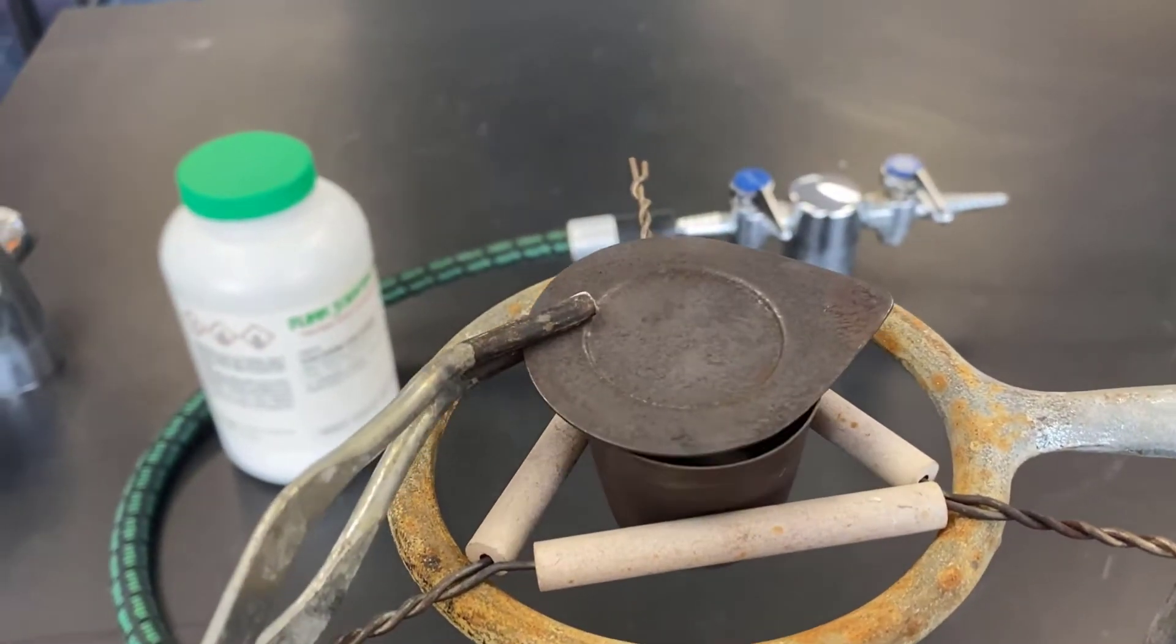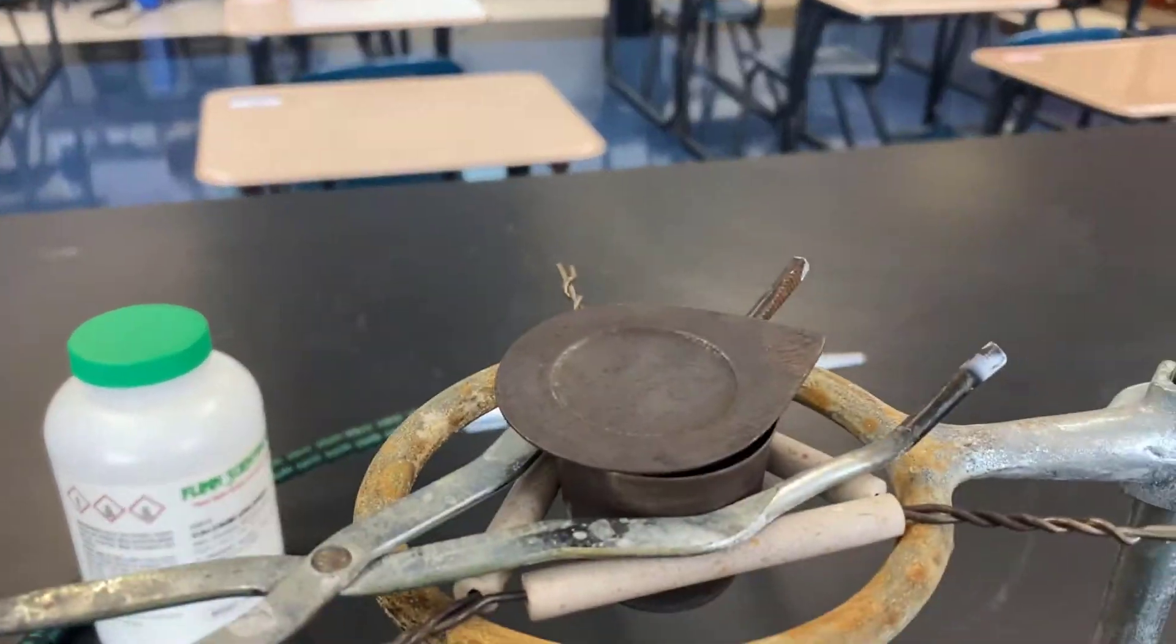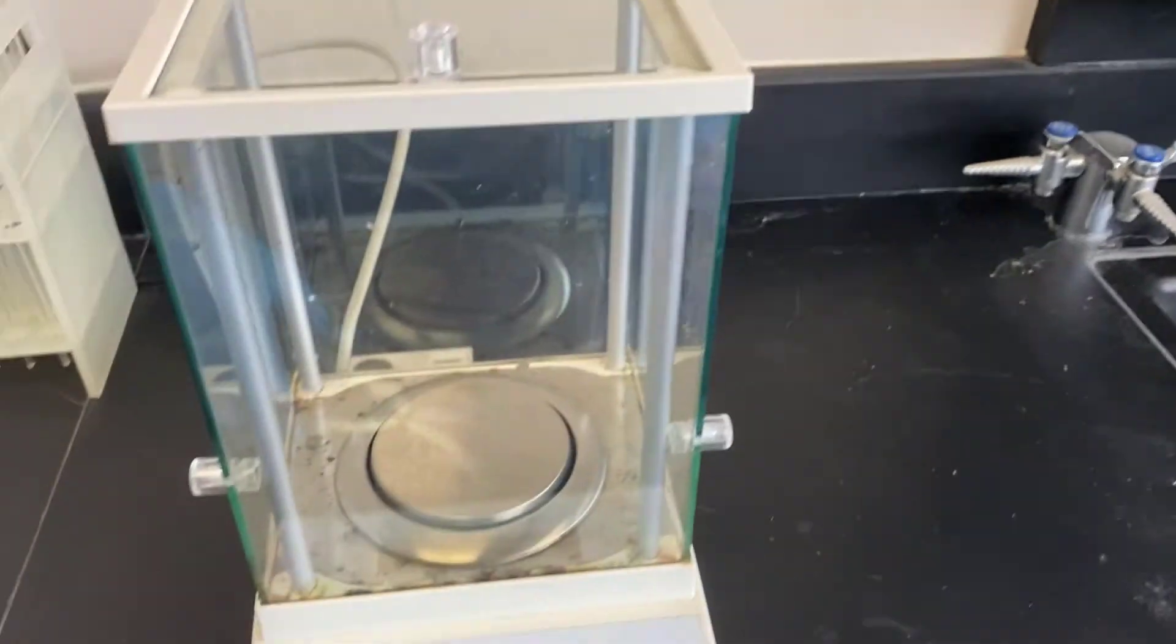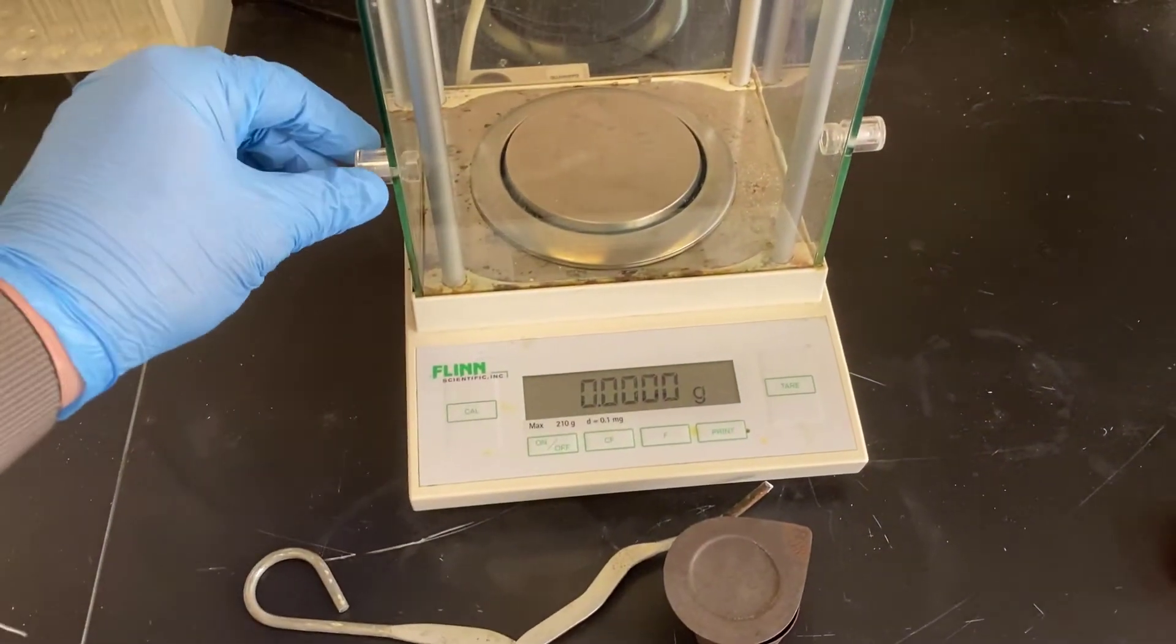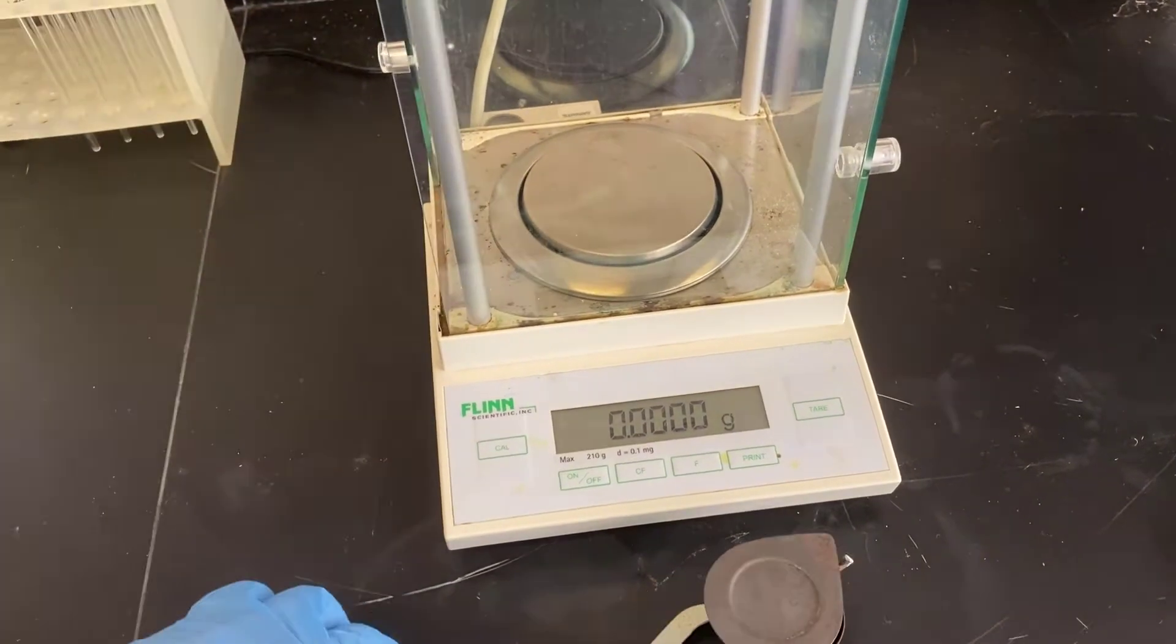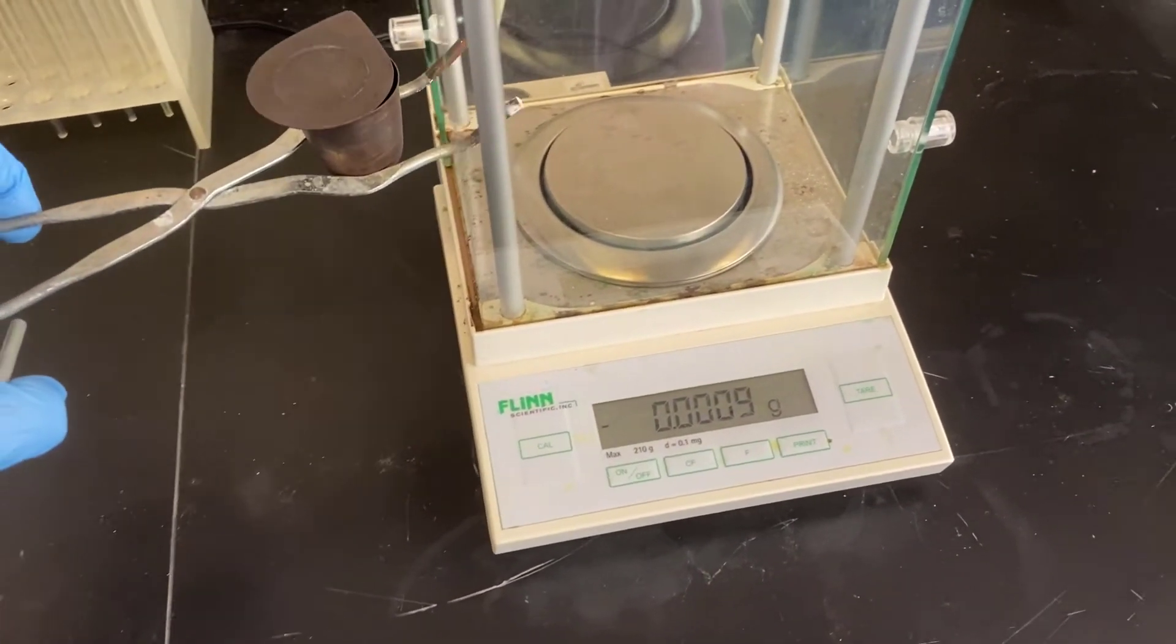Again, once it's cooled, we'll be able to go ahead and get its mass. The hope is that all of the water has left. If you watch the heating, you'll notice that we only left a small gap between the crucible and the lid so that water vapor could escape. The mass loss should be water.